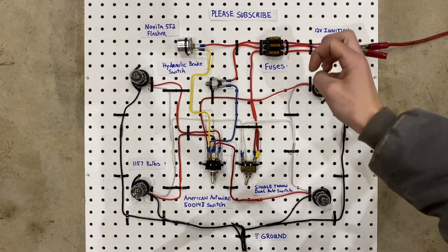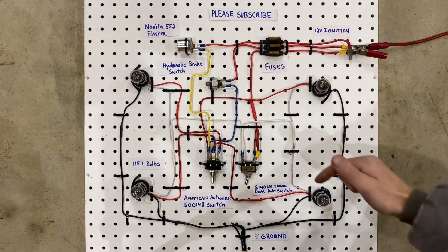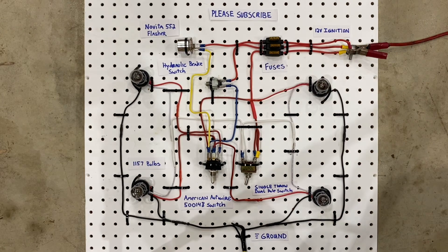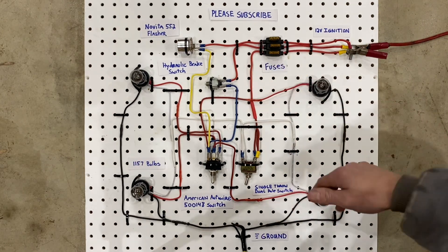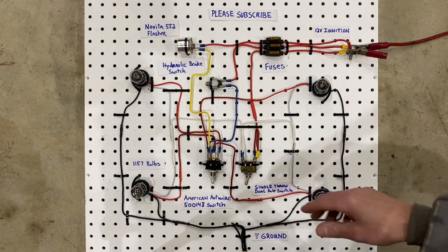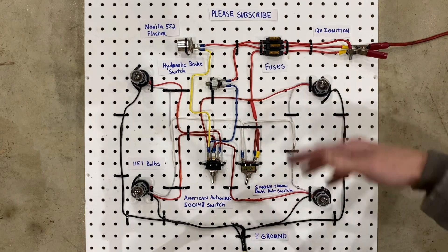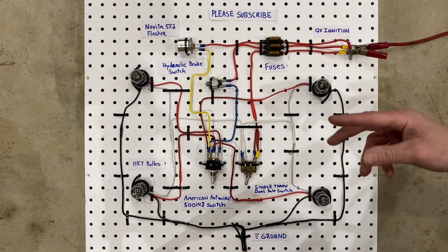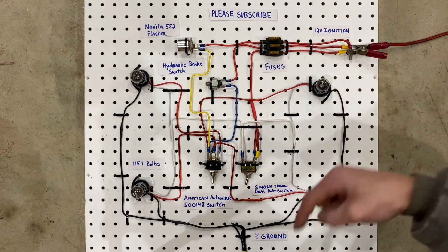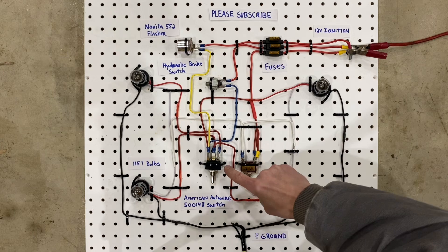Right here, you'll notice we have three fuses. One is for the parking lights, one is for the brake lights, and one is for the turn signal lights. Now the fuse sizes will actually depend on how you build your circuit. These bulbs are going to pull a different amperage than LEDs, and if you added additional bulbs to the circuit, it would change the fuse size as well.